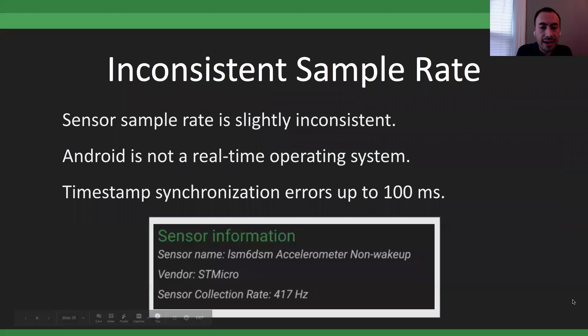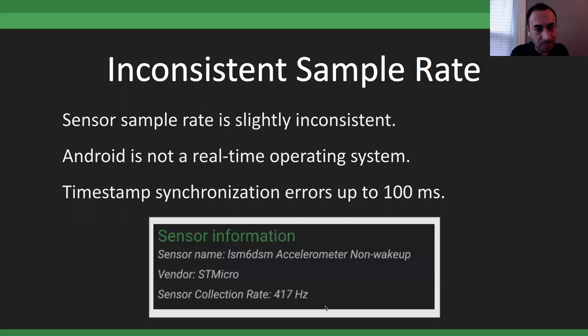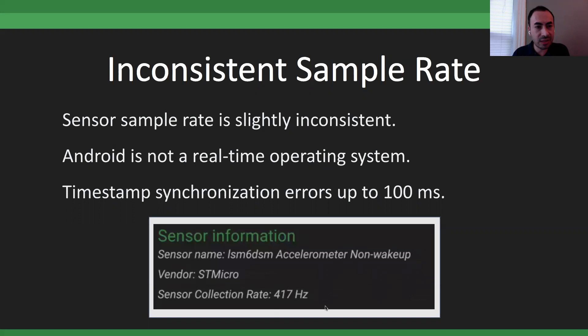On Android specifically — unlike iOS — the sample rate is slightly inconsistent. Android is not a real-time operating system; many background processes compete, and the OS gets the data and makes it available to you at some later point, potentially with up to 100ms latency. The sensor collection rate in my app shows something like 417–416 Hz — it's generally unstable at the highest frequency by a couple of hertz, though not massively so.